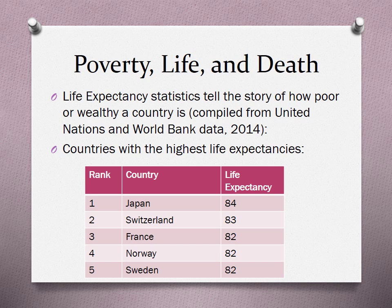So let's look at how poverty affects lifespan. The countries with the highest life expectancies — Japan, Switzerland, France, Norway, Sweden — have life expectancies of 82 to 84 years. What do all these countries have in common? They tend to be pretty wealthy, and they all have universal health care.